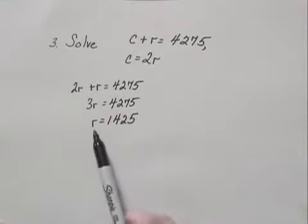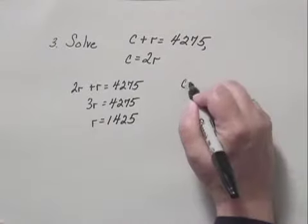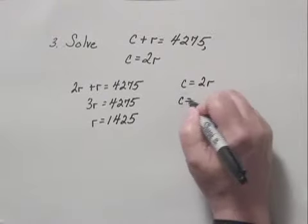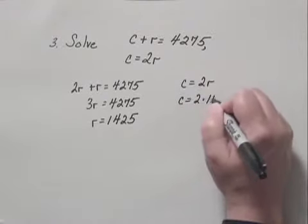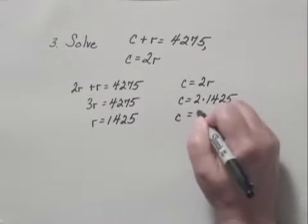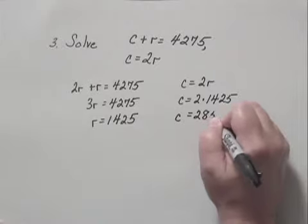Having solved for R, I now need to solve for C. But I know from the second equation that C is two times R. So C would be two times 1,425, or C would be 2,850.